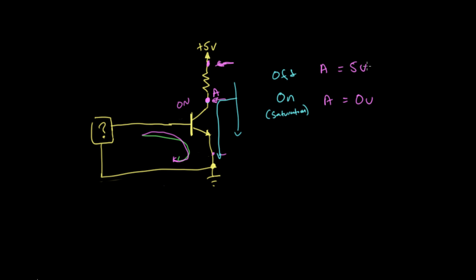This seems maybe a little bit backwards than what you might think. When the transistor is off, we have 5 volts at point A. When the transistor is on, we have zero volts at point A. So maybe we could connect an LED to this point A and actually kind of see this sort of backwards voltage — connecting the LED from the collector to the emitter of the transistor, across it.